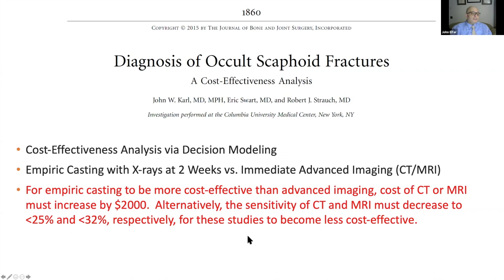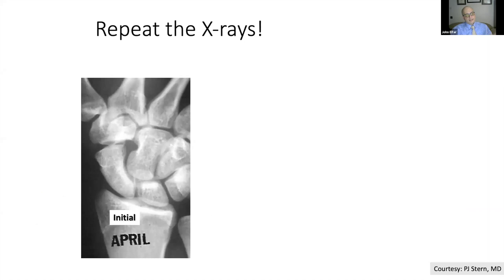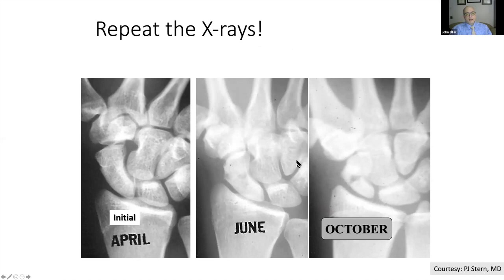A case from Dr. Stern shows a PA, lateral, and scaphoid view. You're supposed to know to repeat x-rays — here's an example of an April film where in June it starts to show, with little cysts forming. By October it's clearly falling apart, and you wish you had known about it back in April.